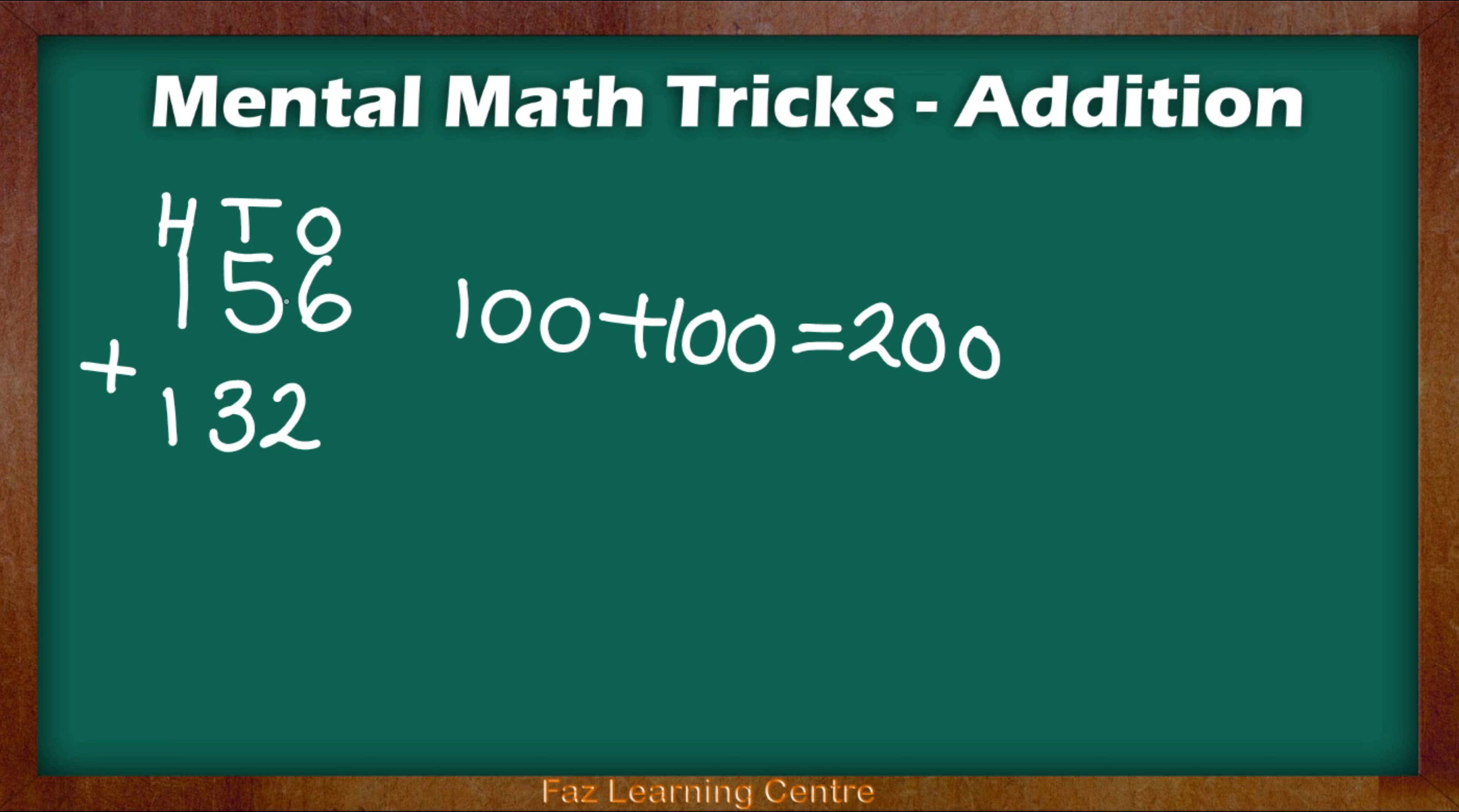Then we will look at the tens, which are 5 and 3. So 5 tens is 50 add 3 tens is 30. 50 add 30 is 80. And then I look at the ones. 6 add 2 is 8. You might be able to realize that this question is nice and simple. So let's look at it. 200 add 80 is 280. And then 280 add an 8. Because this is a unit, it just automatically goes on top of the 0.